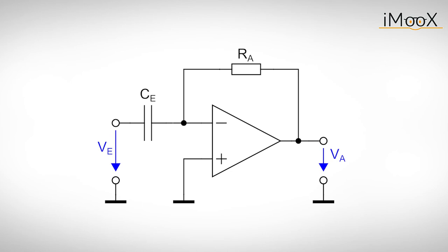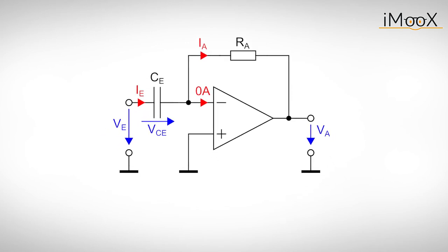The circuit of the differentiator is actually quite simple too. It's just an inverting amplifier with a capacitor instead of the resistor at the input. So, we think back when we dealt with the inverting amplifier. What we did back then was to calculate the current IE, knowing that there is no current I minus flowing into the inverting input. The current IA equals IE.